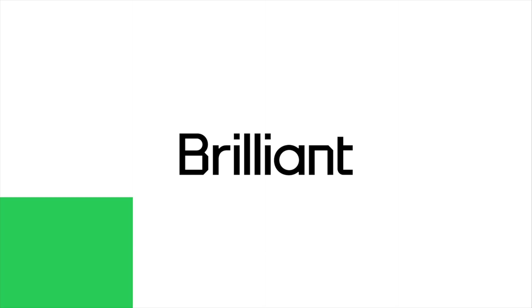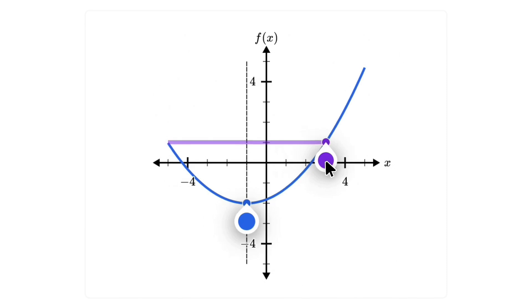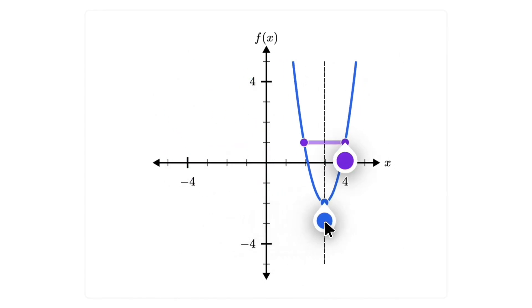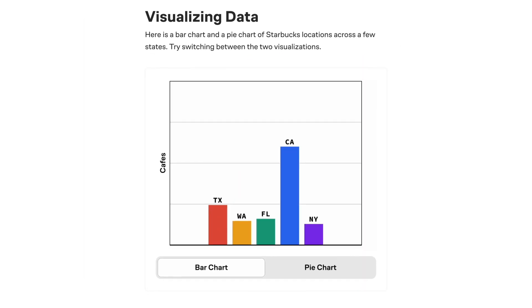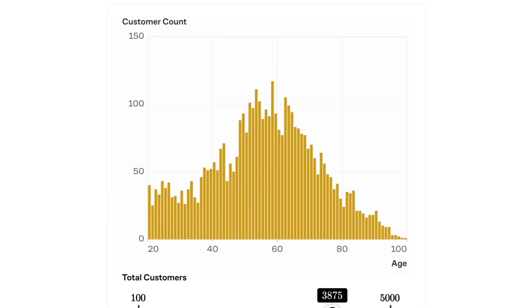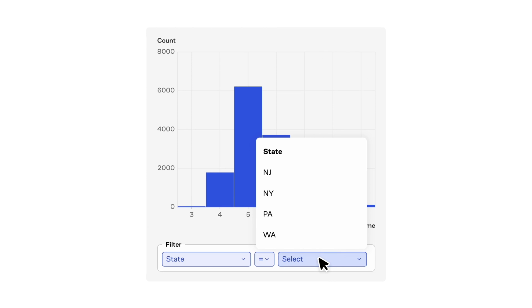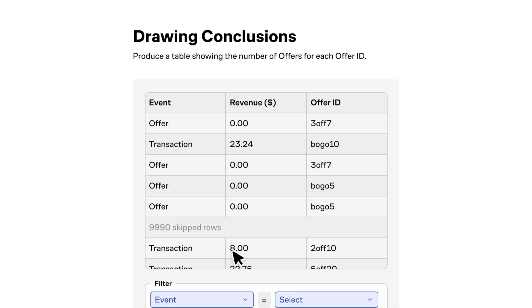If you want to learn every day consistently over a long period of time, you should try the sponsor of today's video, Brilliant. Brilliant helps you get smarter every day with thousands of interactive lessons in math, science, programming, data analysis, and AI. It's a hands-on learning app designed for deep understanding — unlike passive lecture videos, its hands-on approach, proven to be six times more impactful, helps you build knowledge from the ground up through problem solving.